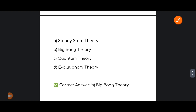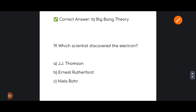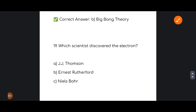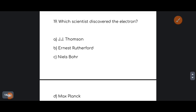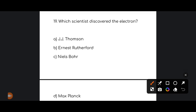Next: which scientist discovered the electron? The correct answer was discussed — the electron was discovered by J.J. Thomson.